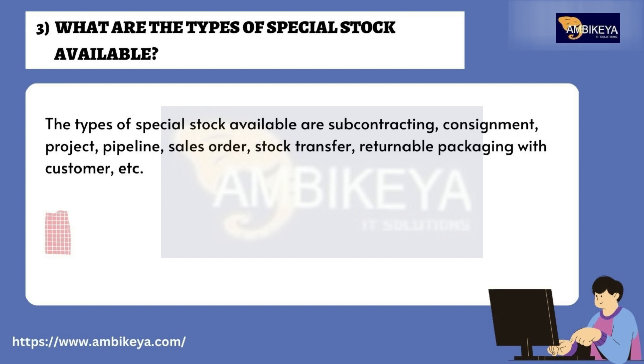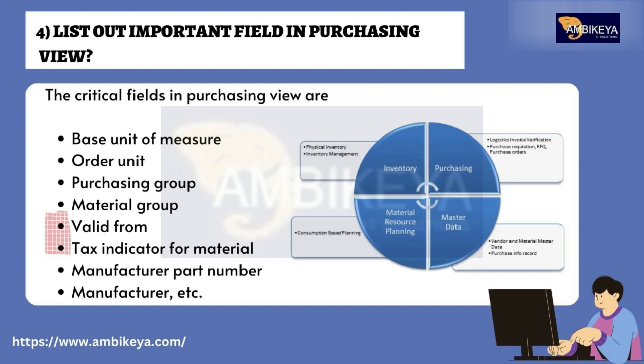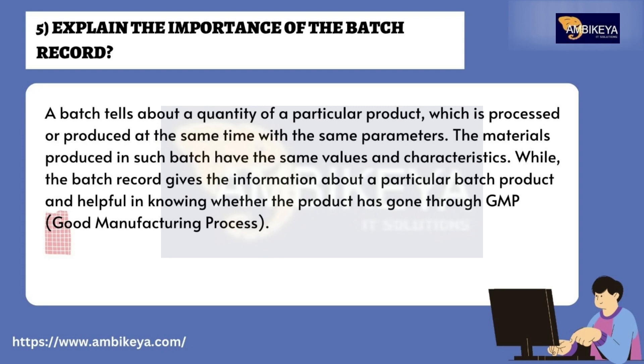Question number four: list out important fields in the purchasing view. The critical fields in purchasing view are: base unit of measure, order unit, purchasing group, material group, valid from, tax indicator for material, manufacturer part number, manufacturer, etc.